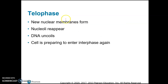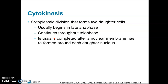In telophase, everything that happened in prophase reverses: the nuclear membrane reforms, the nucleoli reappear, and the DNA uncoils and forms back into chromatin. The cell then prepares to enter interphase again. Cytokinesis overlaps with telophase — the cytoplasm divides and the cell pinches in half so there is a plasma membrane around each new daughter cell.